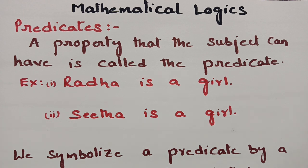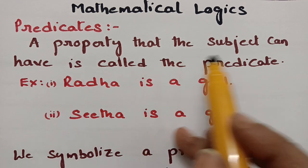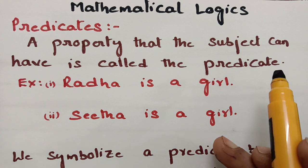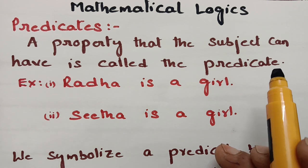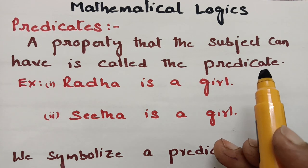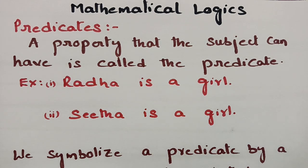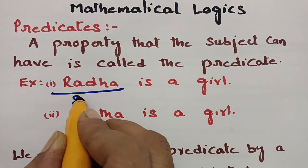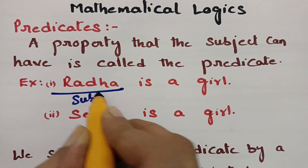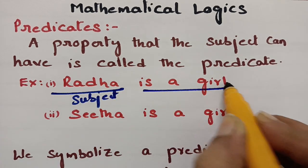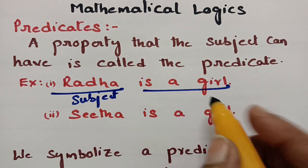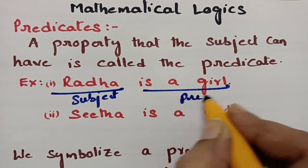So what is a predicate? A predicate is nothing but the property that a subject can have. What is the subject and what is the property of that subject? For example, 'Radha is a girl.' Here, Radha is the subject, and 'is a girl' is the property of that subject — which is the predicate.